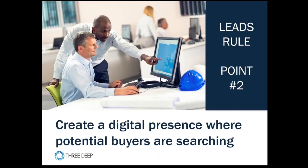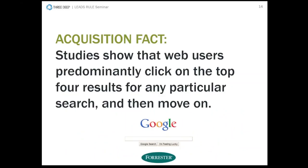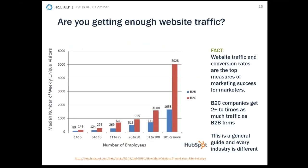Our second point is getting a digital presence where potential buyers are actually searching. Forrester found that most people click on the first three or four results and then move on — and 'move on' means hitting the back button and retyping a different search string, not going to page two or three. About 70% of traffic always clicks on page one. You can augment with paid media if you're not showing up on page one for certain terms.